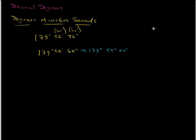Right? Because 60 minutes is equal to 1 degree, and 60 seconds is equal to 1 minute. 60 seconds in 1 minute. And there's 3600 seconds equal to 1 degree.